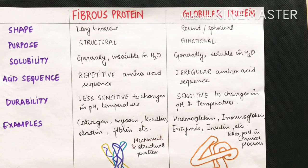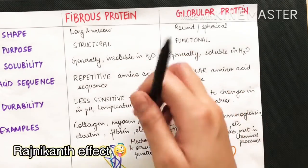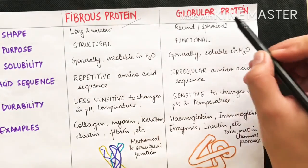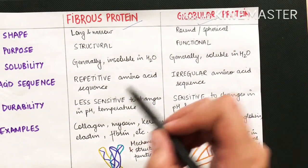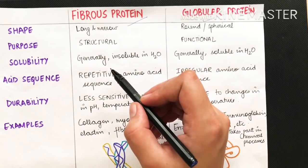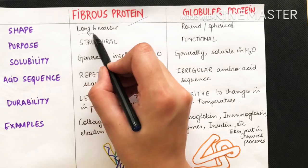In this video we'll be further looking into protein structure. As we move to a higher level of structures in protein, we categorize them into basically two major categories: one is the fibrous protein and the other one is the globular protein. Fibrous proteins, as the name suggests, are fiber-like, long and narrow.